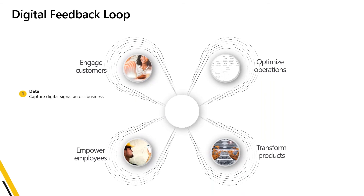If you ask people what digital transformation is, you'll get a different answer. So Microsoft created a framework called the digital feedback loop to highlight how digital transformation is enabled, and at the center is data. Data is coming out of everything — every product is being wired up with telemetry. My thermostat knows when I'm changing the temperature; every motor manufactured is emitting telemetry; every time I browse the web, there's telemetry being created. This torrent of information allows us to better understand our customers, our operations, and the use of our products and services.